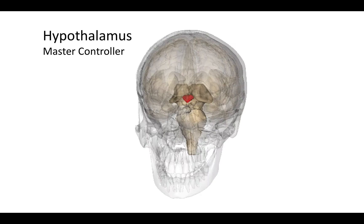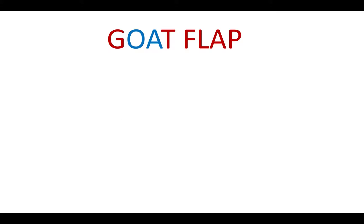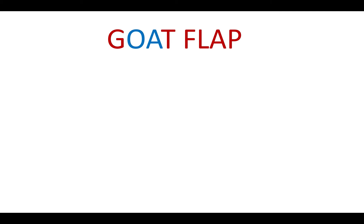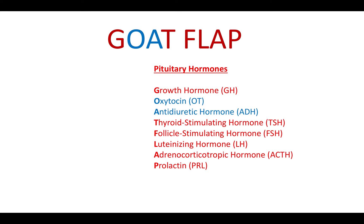The trick for memorizing the hormones of the pituitary gland — the eight we're focusing on — is the acronym GOAT FLAB. Those eight hormones are: growth hormone, oxytocin, antidiuretic hormone, thyroid-stimulating hormone, follicle-stimulating hormone, luteinizing hormone, adrenocorticotropic hormone, and prolactin.